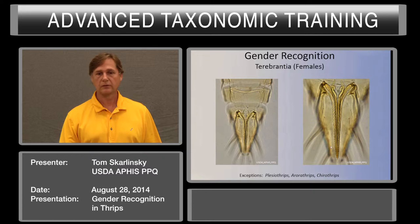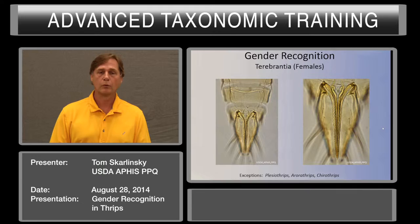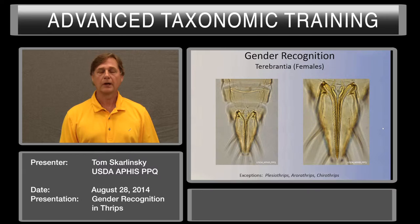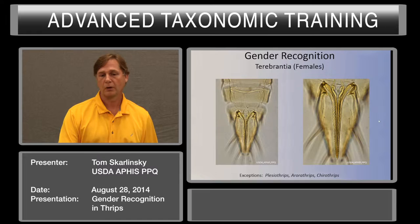There are some exceptions: Plesiothrips, Ororothrips, and Chirothrips don't necessarily have that. But most of the time you're going to run into the females with this type of ovipositor that's serrated.